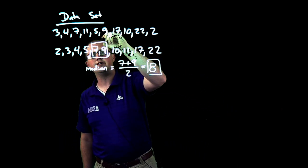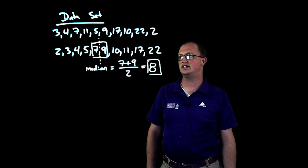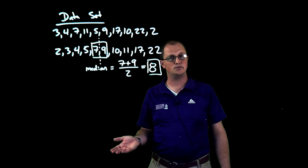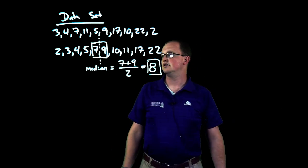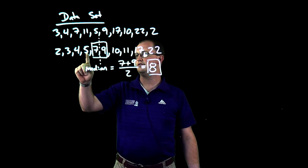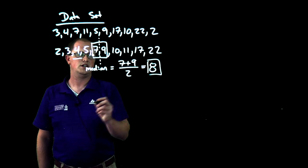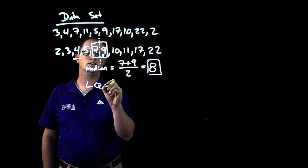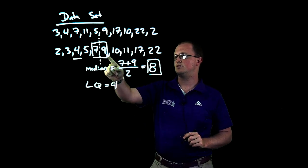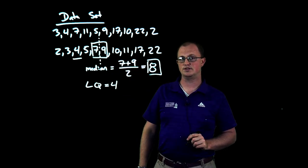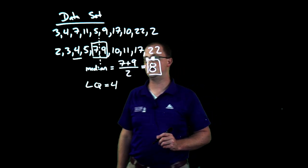That breaks our data set in the middle. Now we want to ask: what is the median of the lower half and what is the median of the upper half, to get our lower and upper quartiles? Our lower half has 5 data points, so the middle value is 4 — our lower quartile is 4. Our upper half also has 5 data points, so 11 is going to be our upper quartile.